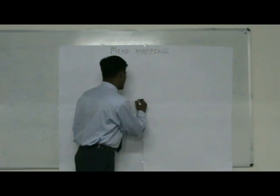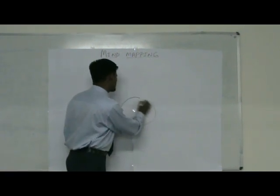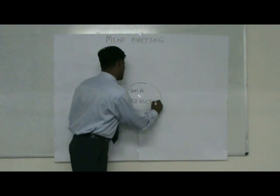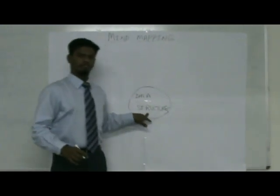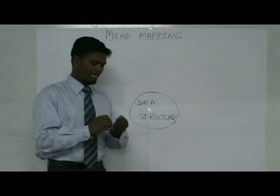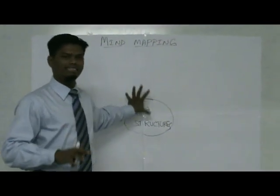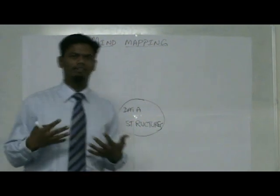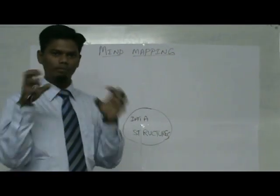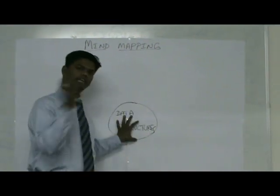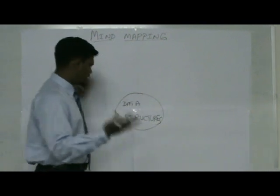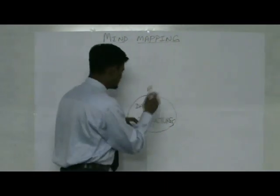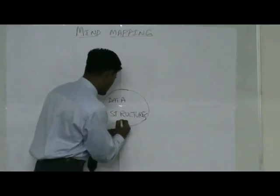Any mind map should start at the center of the page. For example, we have taken here Data Structures as the subject name. The best part of mind mapping is whatever you do, it has to start at the center of the page. And anything you do in mind mapping should be related to physicalizing and it has to have a relevant picture, so that as soon as anyone sees the picture they relate the topic to it. For Data Structures, we can give a picture — say data is A, B, C and there is a structure.